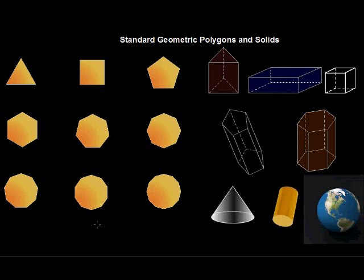First of all, the polygons in orange here, and these are all called regular polygons. The reason these are called regular polygons is because all of the sides are the same length, as well, all of the interior angles are the same.